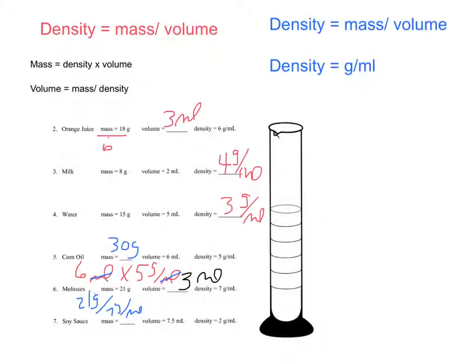Soy sauce, mass equals density times volume. 7.5 times 2. Remember that our milliliters cancel out, and we should have an answer of 15 grams. Always look at how your units cancel out, and apply this equation to each of these circumstances.